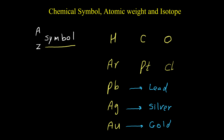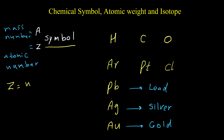There are two numbers that give more information about the elements: A and Z. Z is the atomic number, and A is the mass number. The atomic number Z is equal to the number of protons, and the mass number A is equal to the number of protons plus neutrons.